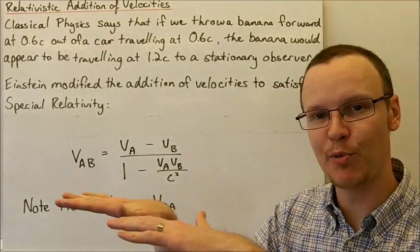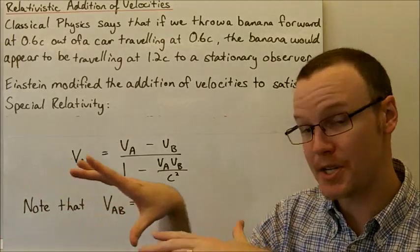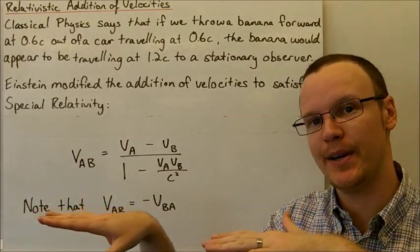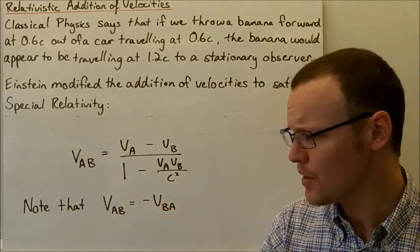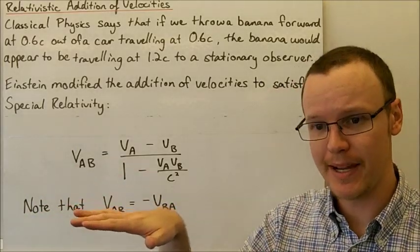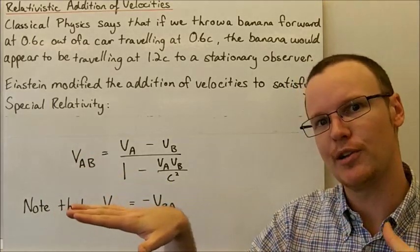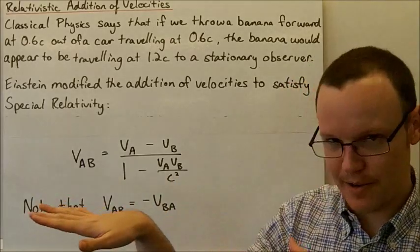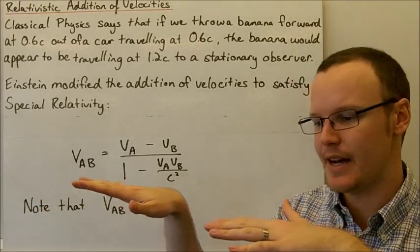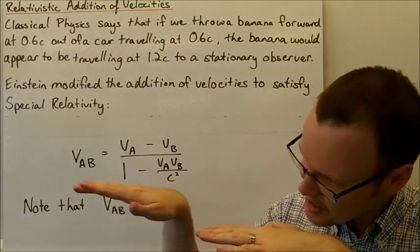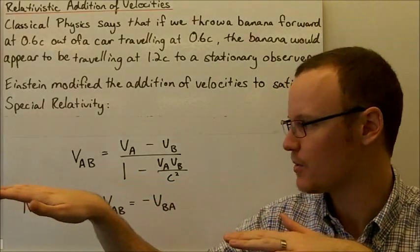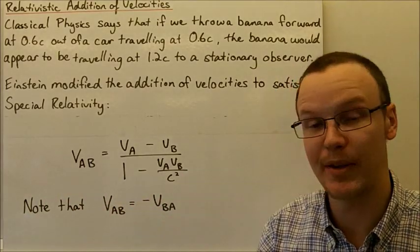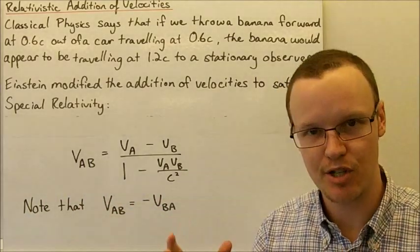So with our two runners — runner B pulling ahead at 15 km/h and runner A lagging behind at 10 km/h — the velocity of A relative to B is negative 5 km/h. But if we look at the velocity of B relative to A, A is going to see B pulling ahead at positive 5 km/h. So it's the negative situation there, but the magnitude of velocity still remains the same.